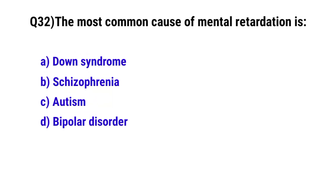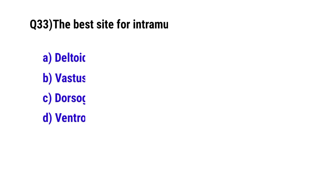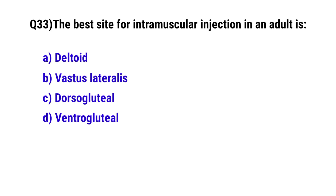Question number 32: The most common cause of mental retardation is? The correct option is A: Down syndrome. Question number 33: The best site for intramuscular injection in an adult is? The correct option is D: Ventrogluteal.